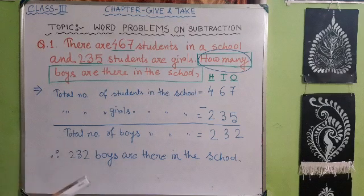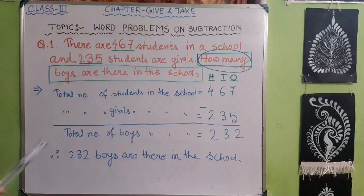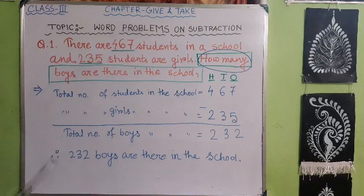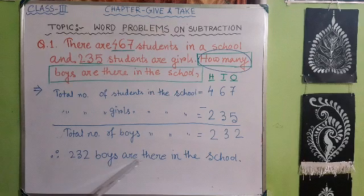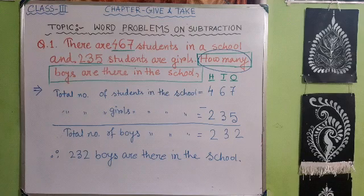We have not completed our answer yet, because if we do not write the final answer, we will not complete our answer. To give the final answer, we need to put the therefore sign. Must put this sign and start your final answer. Therefore, 232 boys are there in the school. This is our answer to the first question.